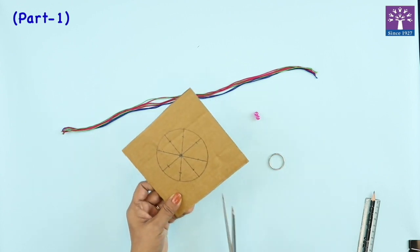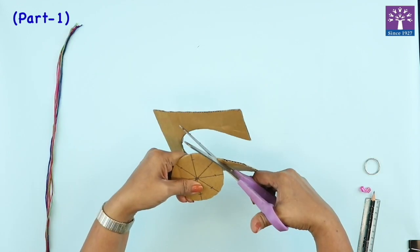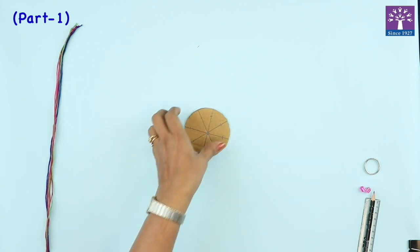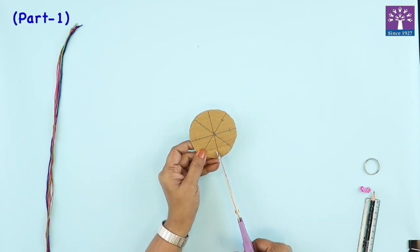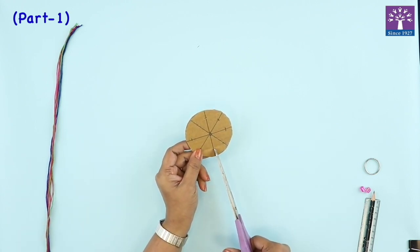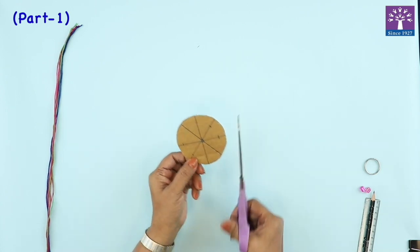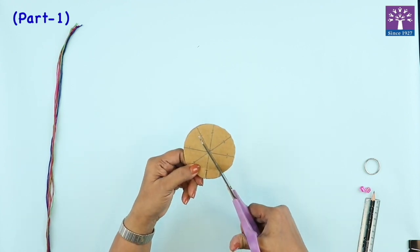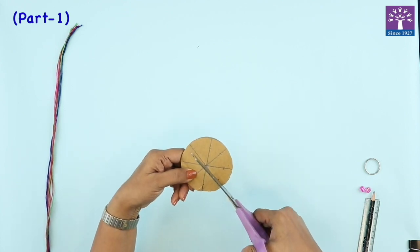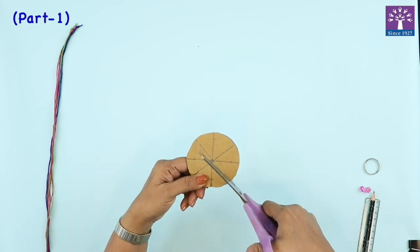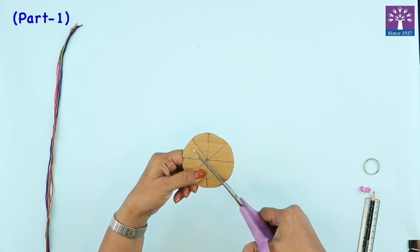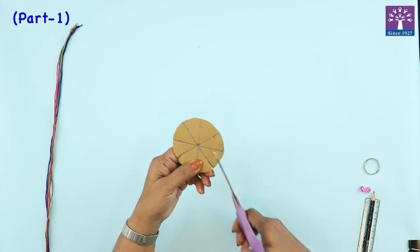Now we'll cut this circle out. So we have this circular shape. Now cut slits till the marking. See, we have marked over here at every line, so we will make eight small slits like this. These slits will be used to fix our threads.